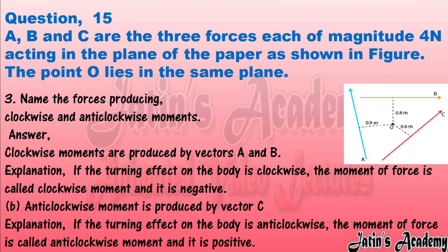Part 3: name the forces producing clockwise and anticlockwise moments. Answer: clockwise moments are produced by vectors A and B. If the turning effect on the body is clockwise, the moment of force is called clockwise moment and it is negative. Anticlockwise moment is produced by vector C. If the turning effect on the body is anticlockwise, the moment of force is called anticlockwise moment and it is positive.